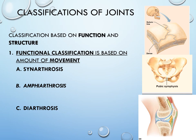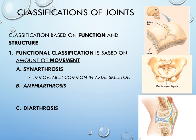All joints have both a functional and structural classification. Functionally, we ask how much movement the joint has. Synarthrosis is an immovable joint, common in the axial skeleton — think of the skull bones. They come together and form synarthrotic joints with no movement. Amphiarthrosis is slightly movable, also fairly common in the axial skeleton.